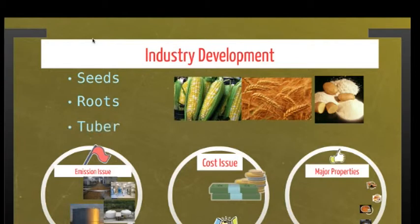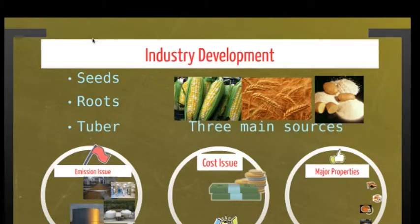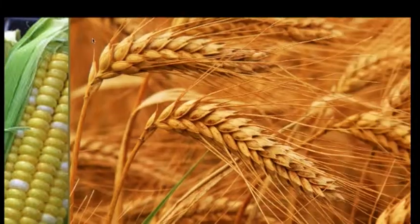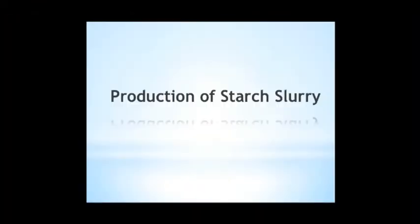Although, to this day, starch is extracted from more than 50 types of plants, the three varieties that are primarily produced are corn, wheat and potato starch. The corn wet milling process begins with the production of starch slurry.